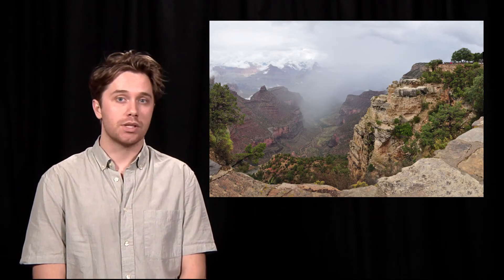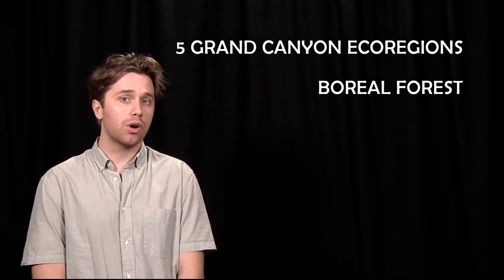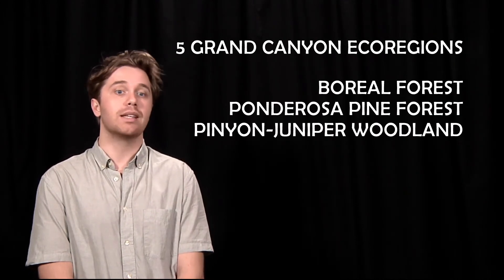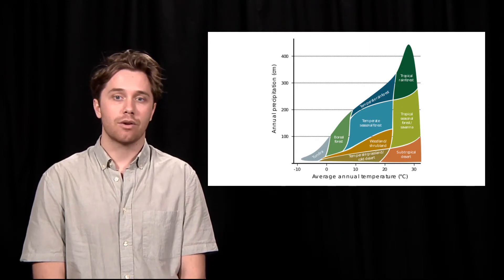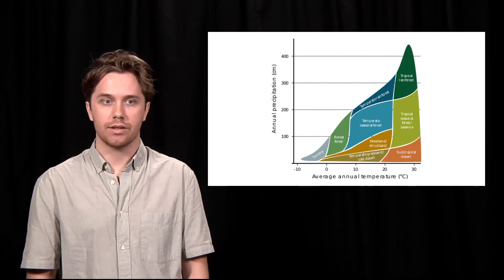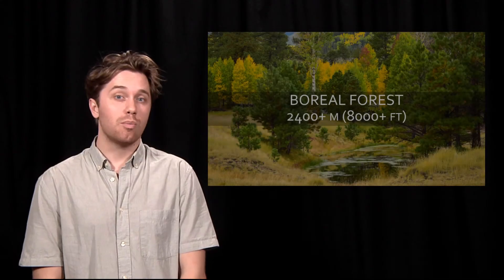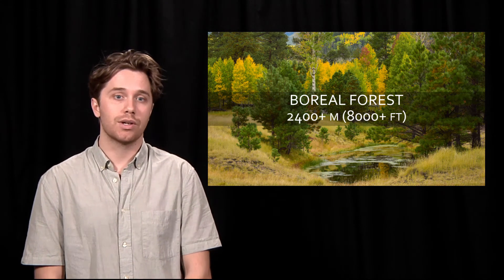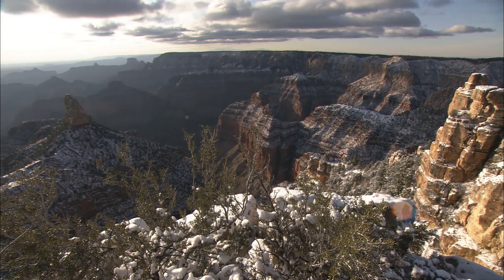Due to the large range of temperature and precipitation over the Grand Canyon, there is an incredible diversity of plant and animal life. There are five distinct biotic communities or ecoregions found in the Grand Canyon: the boreal forest, the ponderosa pine forest, the pinyon-juniper woodland, the desert scrub, and the riparian zone. Precipitation and temperature are the most relevant variables for determining the ecoregions within the Grand Canyon. Multiple ecoregions can exist within one temperature or one precipitation regime. Above 2,400 meters or roughly 8,000 feet, the boreal forest is only found along the North Rim — the coolest and wettest community in the park. Life here adapts to an extreme winter climate and short, frenzied growing seasons.